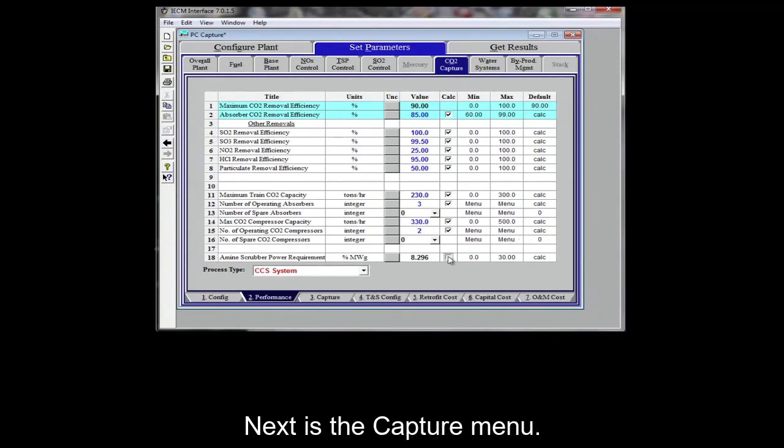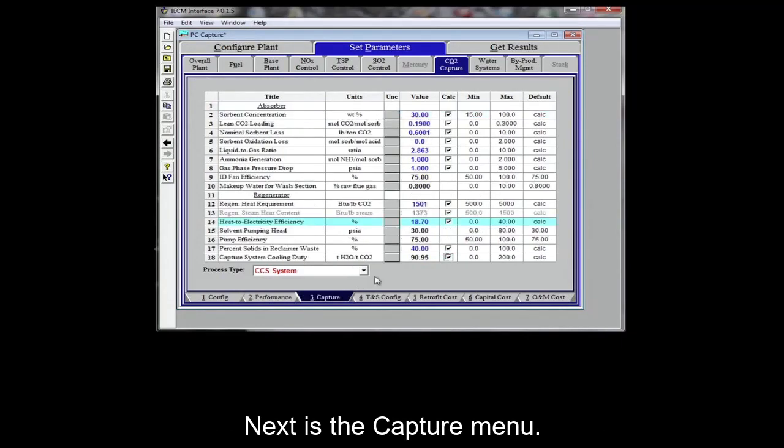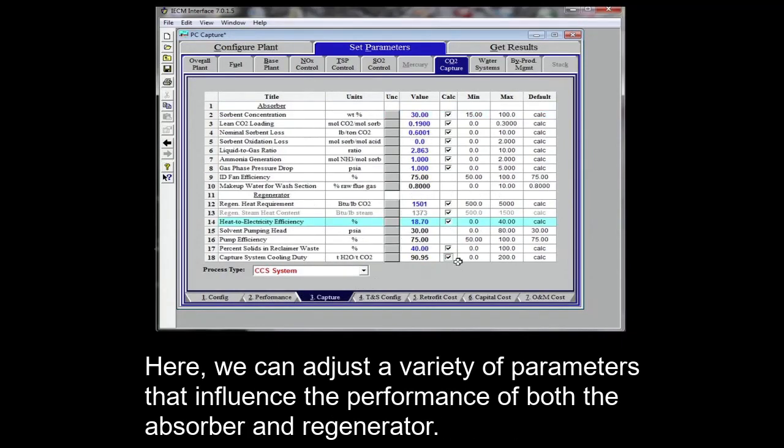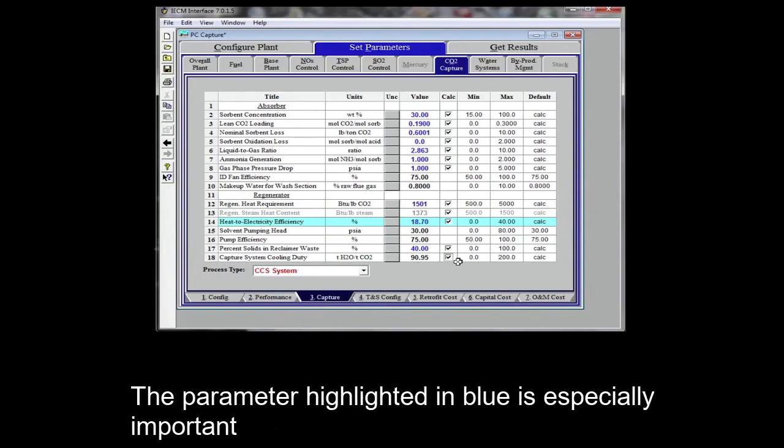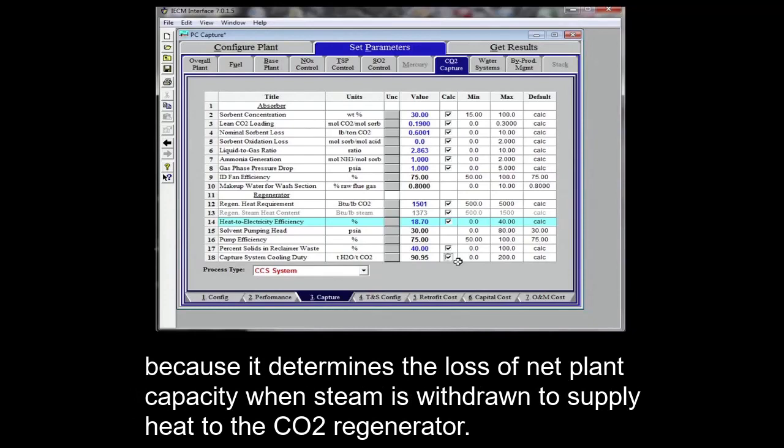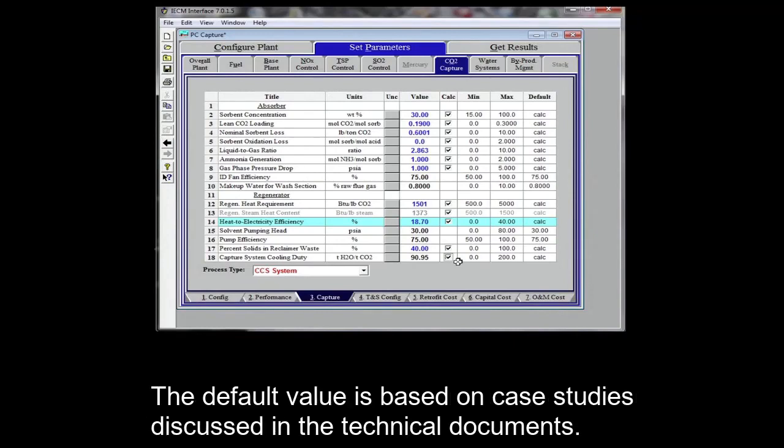Next is the capture menu. Here, we can adjust a variety of parameters that influence the performance of both the absorber and regenerator. The technical documentation has more about each of these parameters and their interactions. The parameter highlighted in blue is especially important because it determines the loss of net plant capacity when steam is withdrawn to supply heat to the CO2 regenerator. The default value is based on case studies discussed in the technical documents.